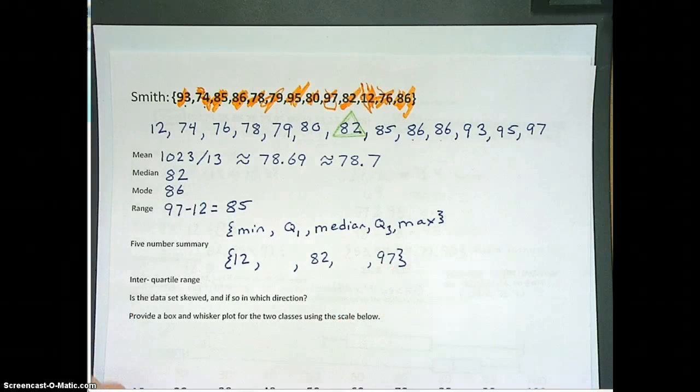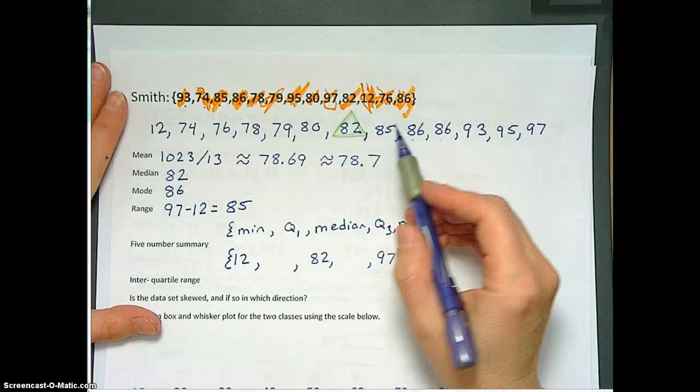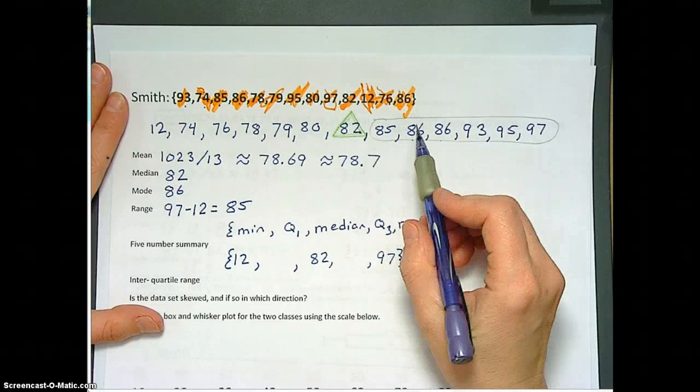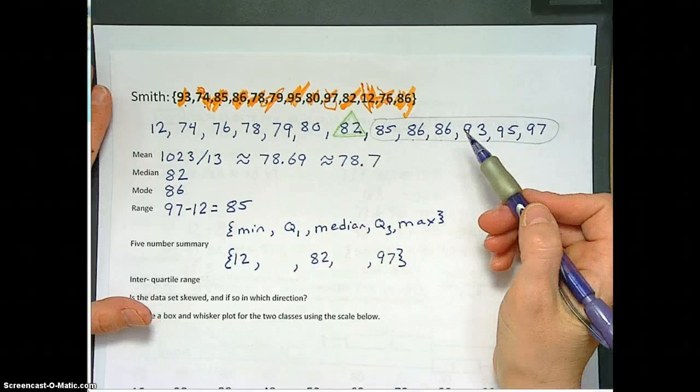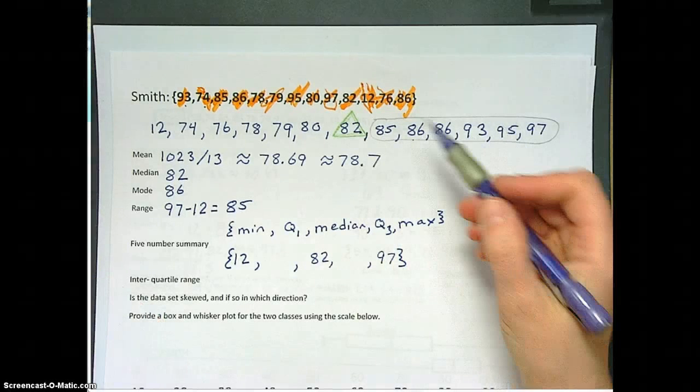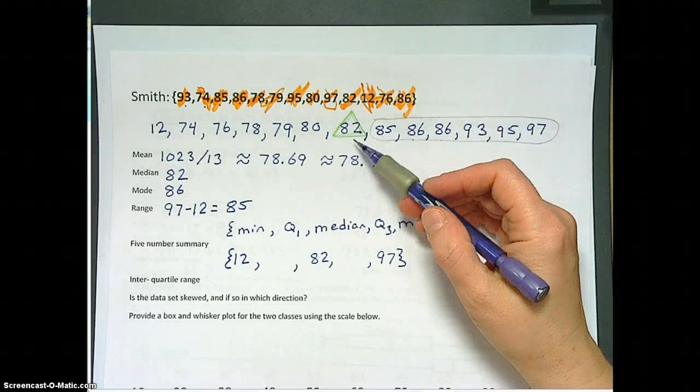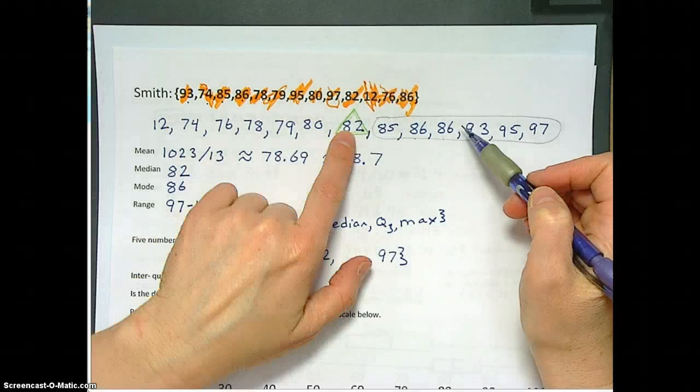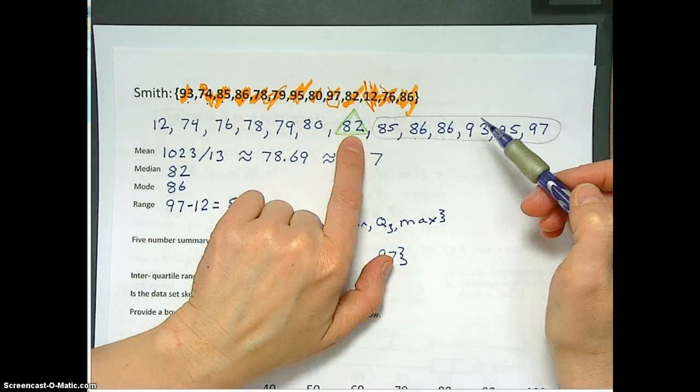Q1 we haven't found yet, so I'm going to leave it blank for a minute. The median is that 82. Q3 we haven't found yet. The max is the highest score up here, so a 97. Let's go ahead and write those down. As for the quartiles, what we do there is we look at the upper half and the lower half, and we find the middle of the upper half. 82 is the median, therefore it is not in the upper half, nor is it in the lower half. It's in the middle, so we're going to ignore the median when we're calculating the quartiles.